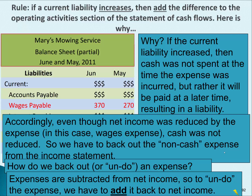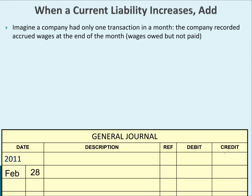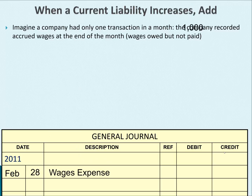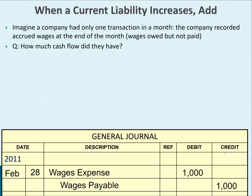We'll look at a single transaction to make this clearer. Imagine a company had only one transaction in a month: the company recorded accrued wages at the end of the month. Accrued means something has accumulated but not yet been paid — wages were owed but have not been paid yet. Wages expense of $1,000 is recorded at month end, and wages payable also increases because payday is not until next month. Since this is the only transaction in February, cash wasn't affected at all, so cash flow was zero.